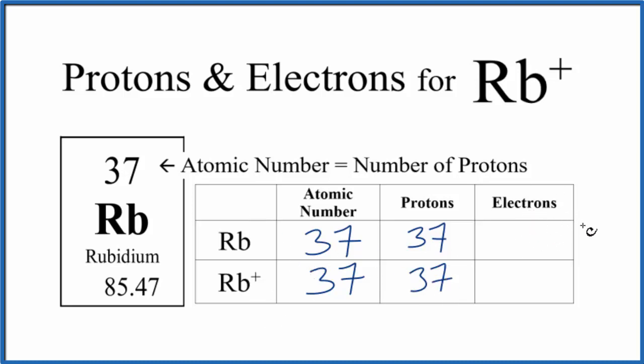The electrons are what's going to be different between an atom and an ion. So to figure the electrons out, we know that if we have a neutral atom, like Rb here, the number of electrons and protons are going to be the same. So we can just write 37 electrons for Rb.